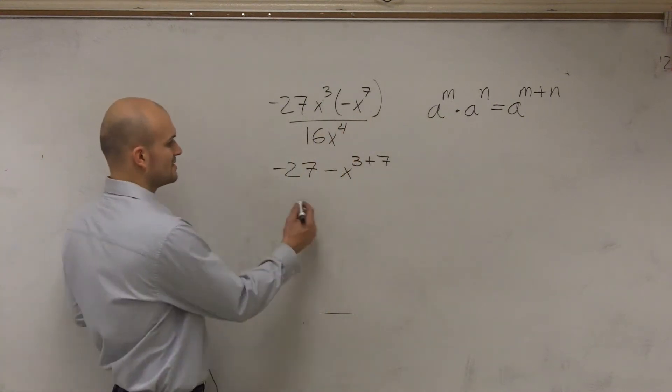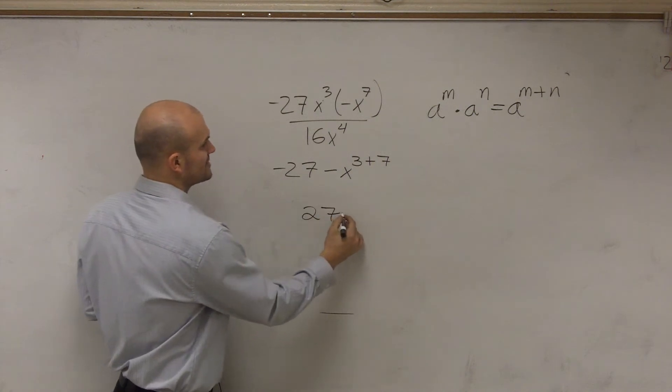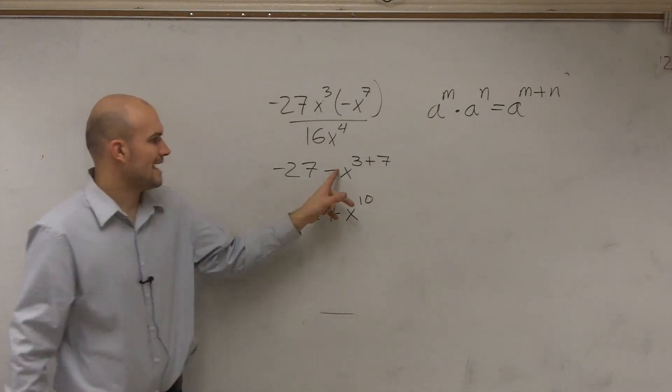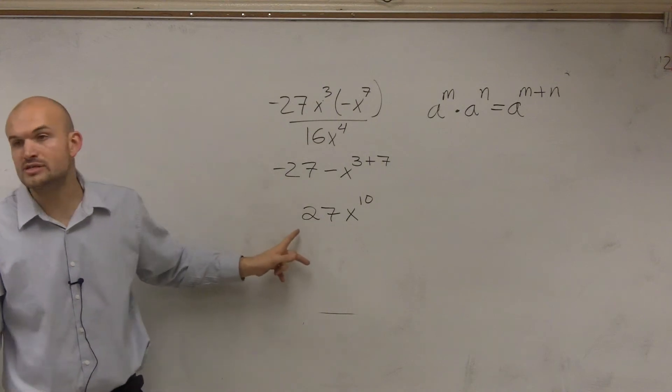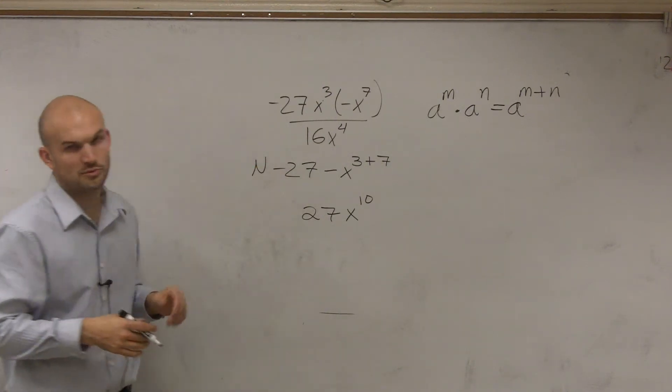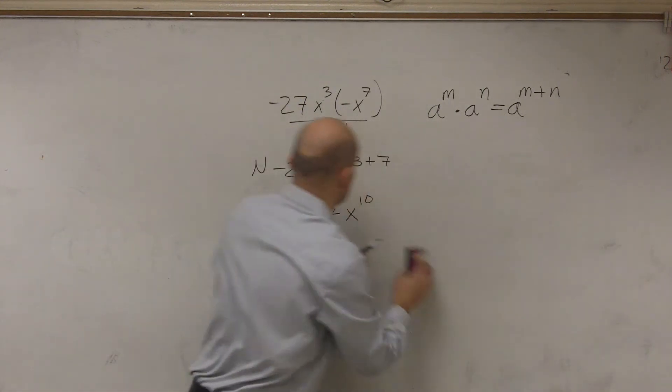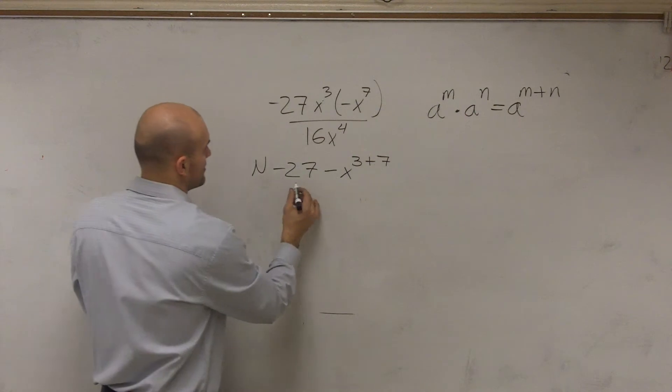So therefore, that produces a positive. I'm just dealing with the numerator right now. A positive 27x to the tenth. Negative x times negative 27 will produce a positive 27. OK, so all I did was that was just the numerator right there. Actually, let's not confuse you. Let's continue with the denominator below.